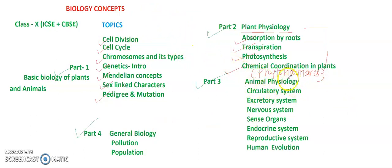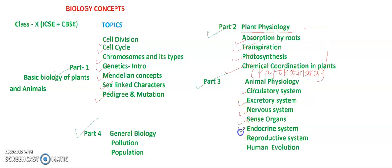Part 3 covers animal physiology — all the contents of animal physiology. The first topic is the circulatory system, followed by the excretory system, nervous system, sense organs including eyes and ears, and the endocrine system in tabular form covering glands and hormones. We will also learn the reproductive system — both human male and female reproductive systems.